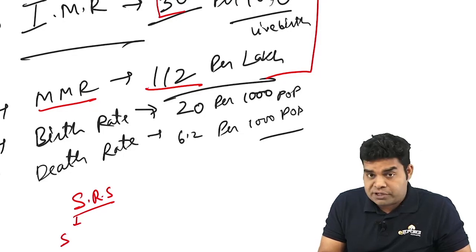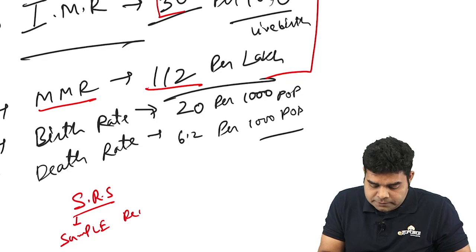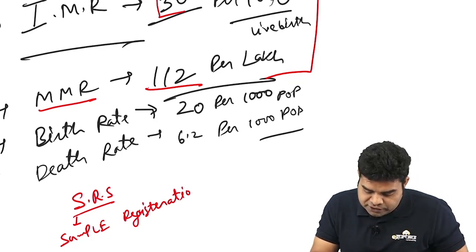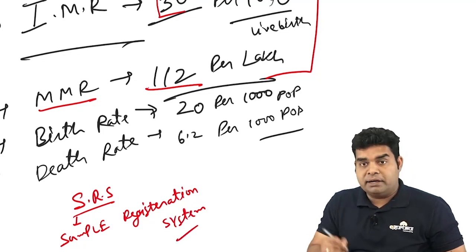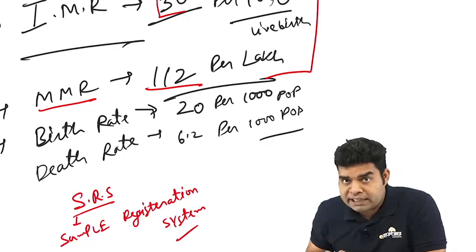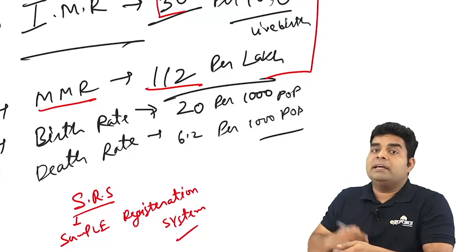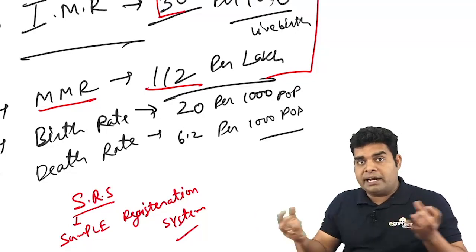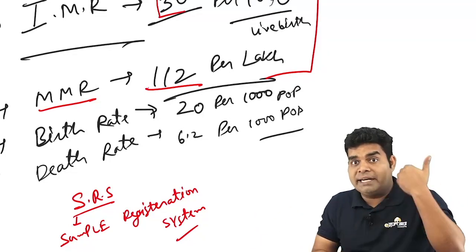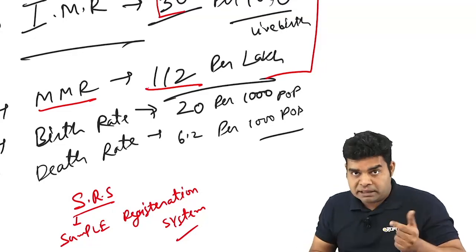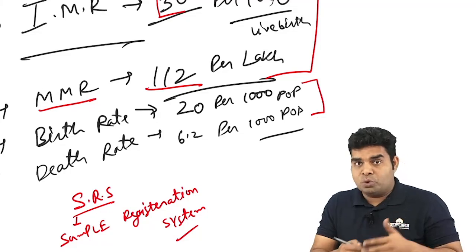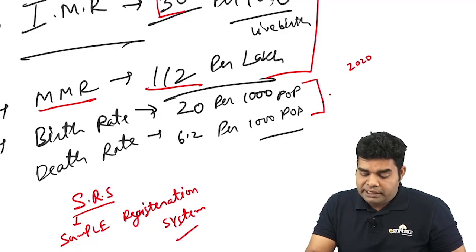SRS is a dual data recording method. Data is first collected by a field worker doing house-to-house visits, and then every six months a supervisor scrutinizes the data. After cross-checking by both, the SRS data is released. Unfortunately SRS data is not very updated — for example, in 2020 we got data only from May 2018.